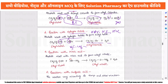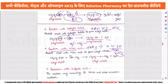The next reaction is with nitric acid (HNO₃). The alcohol reacts with HNO₃ (which can also be written as H–O–NO₂) to give ethyl nitrite (CH₃CH₂–O–NO), with water released.